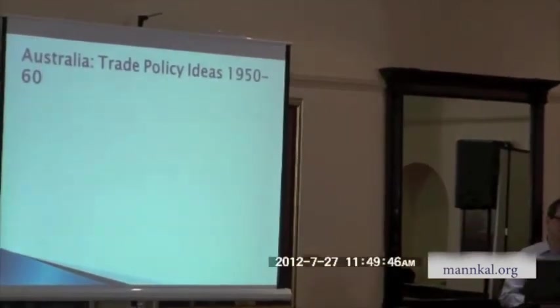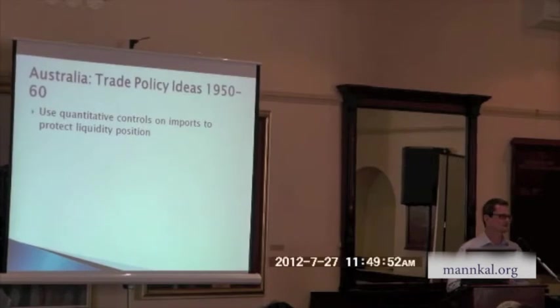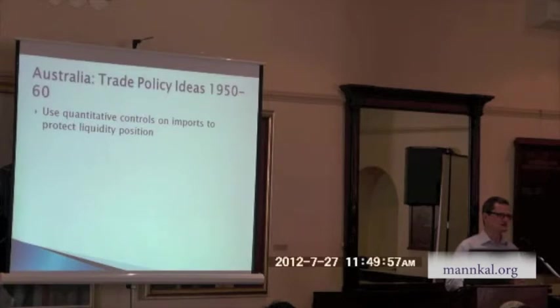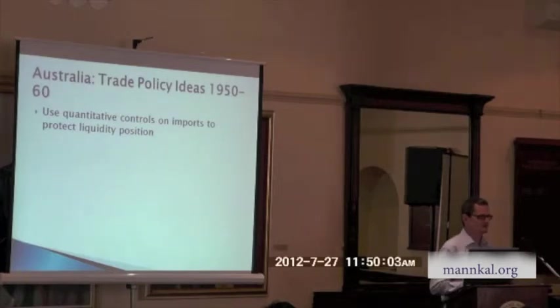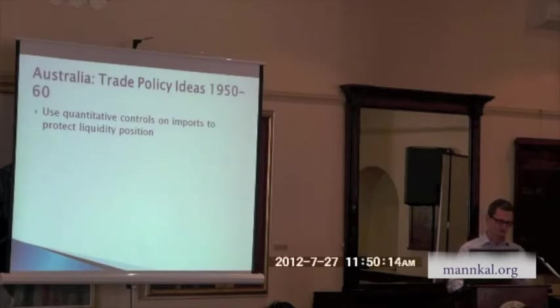That's the context for mainstream Australian trade policy ideas in the 1950s and 1960s. First, the resort to quantitative controls in the early 1950s. Going to the archives, what are the officials saying? They're saying: reserves are falling, we've got to do something, we don't have time to think about the science of tariffs or restrictions — reserves are falling, let's slap on quantitative controls to protect the liquidity position. The level of reserves in 1952 was used as an official reference point for that kind of trade policy action.